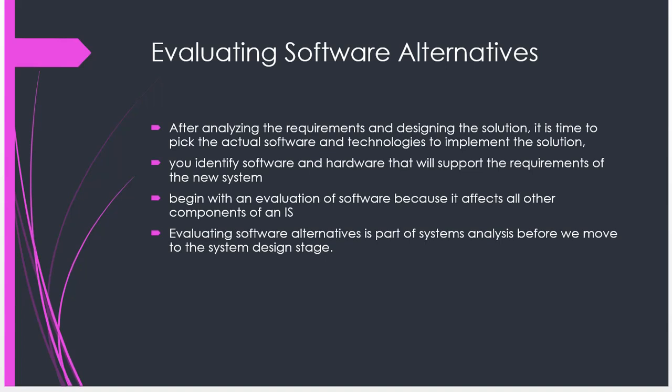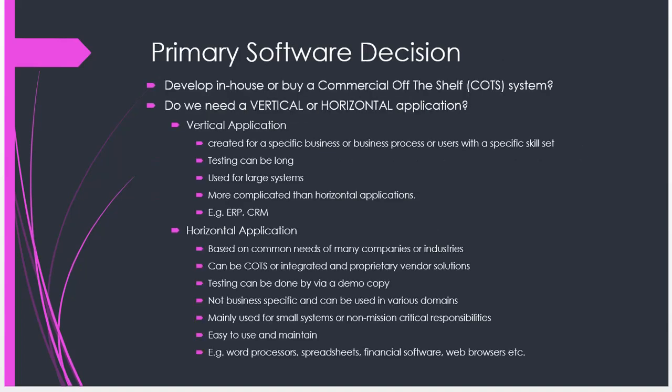When evaluating software alternatives, after analyzing requirements and moving toward designing a solution, you need to pick the actual software and technologies to implement, and identify the software and hardware requirements for the new system. Evaluating software alternatives is part of systems analysis, done before the systems design stage, so you already know the direction you want to take for implementation and development.